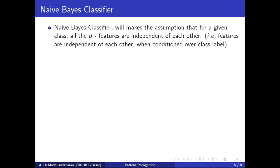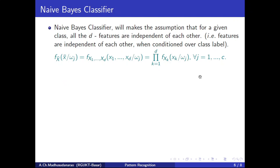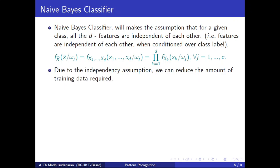The Naive Bayes classifier exploits this advantage. It assumes that all features are independent of each other. Specifically, for a given class, all d features are assumed to be conditionally independent given the class label. This gives f(x̄ | omega j) = product of marginal PDFs, allowing us to reduce the amount of training data required.